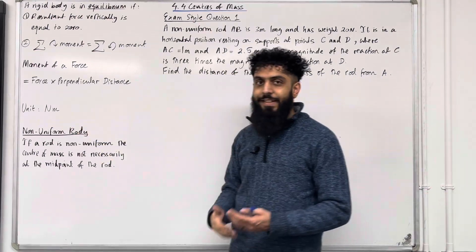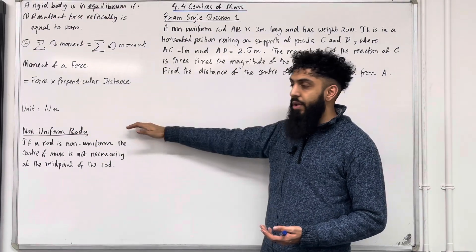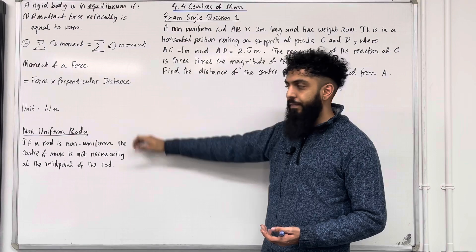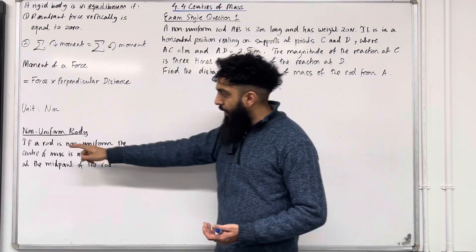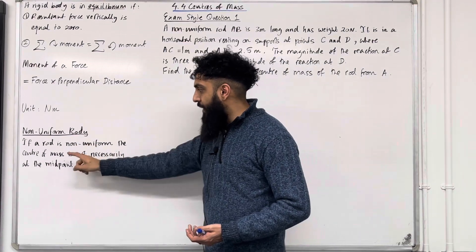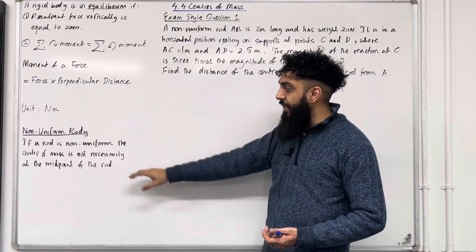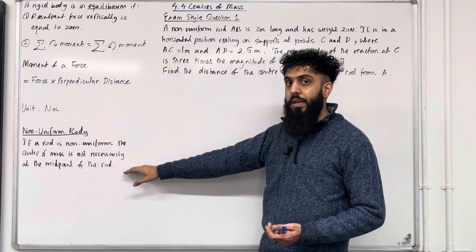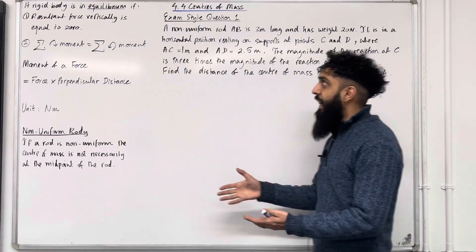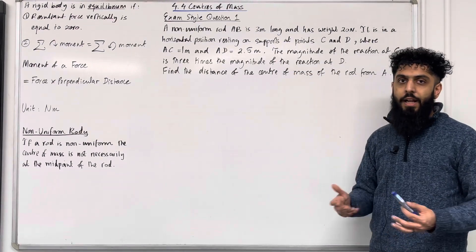In this teaching video, we're going to be looking at a non-uniform body. If a rod is non-uniform, the centre of mass is not necessarily at the midpoint of the rod. These are the key facts of 4.4 Centres of Mass.